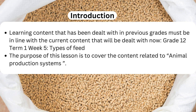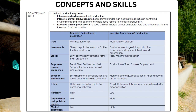Introduction. Learning content that has been dealt with in previous grades must be in line with the current content that will be dealt with now — Grade 12, Term 1, Week 5, types of feed. The purpose of this lesson is to cover the content related to animal production systems. Key concepts and skills include intensive and extensive animal production.